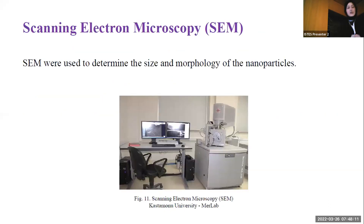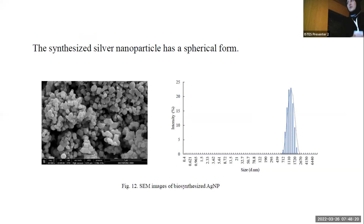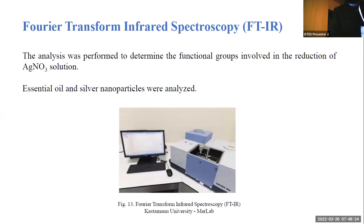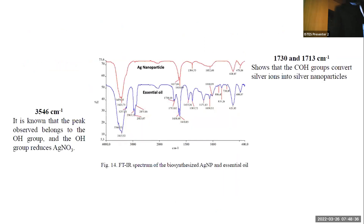Scanning electron microscopy was used to determine the size and morphology of the synthesized nanoparticles. The synthesized silver nanoparticles had a spherical form. Fourier transform infrared spectroscopy analysis was used to determine the functional groups involved in the reduction of silver nitrate solution. Results showed that silver nanoparticles were successfully synthesized.